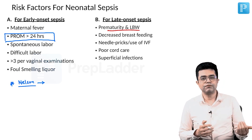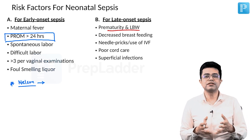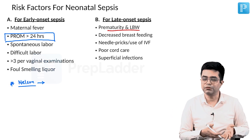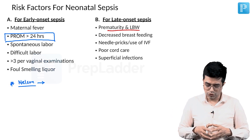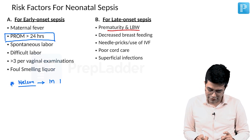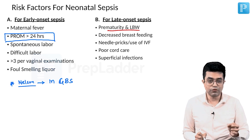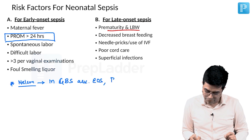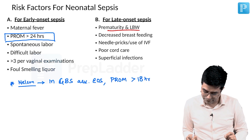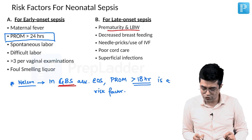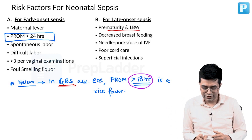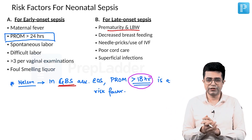Obviously, if there is a prolonged rupture of membrane more than 24 hours, there will be an increased risk of inflammation and increased risk of all the bacteria in the genital tract being transferred to the baby, leading to sepsis. Studies in the Western world have shown that in GBS-associated early onset sepsis, prolonged rupture of membrane more than 18 hours is a risk factor. So when talking about Group B Streptococcus associated sepsis, the cutoff should be more than 18 hours, not more than 24 hours. The same has not been validated in Indian children — we do not have studies.